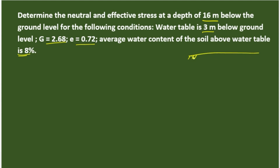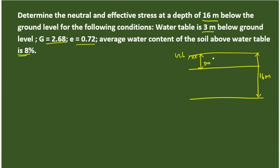So now we have to draw the soil strata. This is the ground level. The soil layer has a depth of 16 meters. At 3 meters below the ground surface, there is the water table — this is the water level, marked as layer AA. The soil has properties: G equals 2.68, void ratio E equals 0.72, and above the water table, water content W equals 8%. These are all the given values.